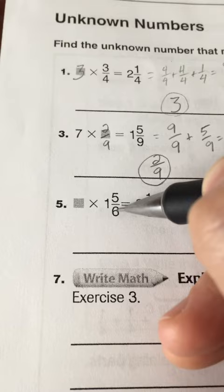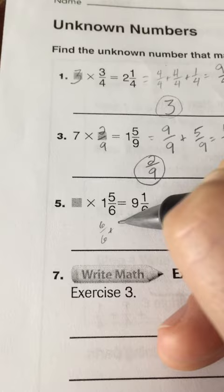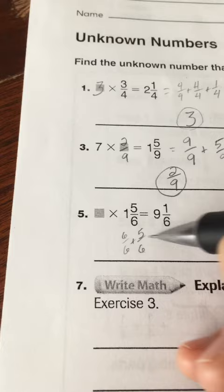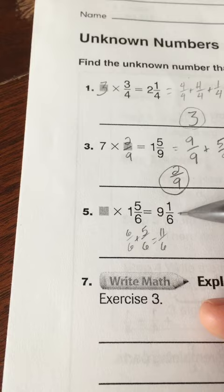We have one whole, which in sixths is going to be 6 sixths, plus the fraction part, 5 sixths. So that's going to equal 6 plus 5 is 11 sixths.